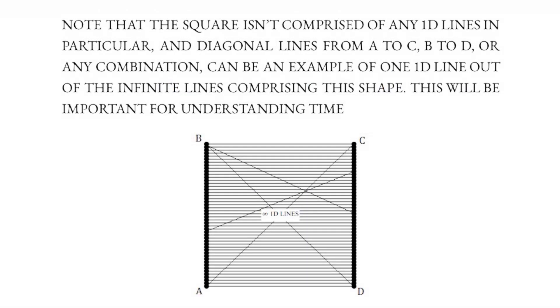Note that the square isn't comprised of any one dimensional line in particular — diagonal lines from A to C, B to D, or any combination can be an example of one line out of the infinite lines comprising this shape. This will be important for understanding time.